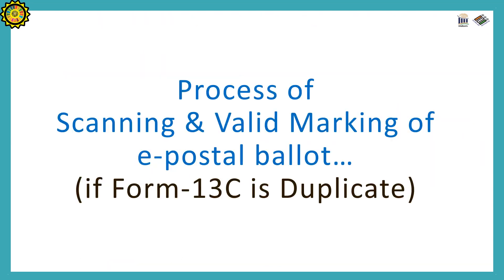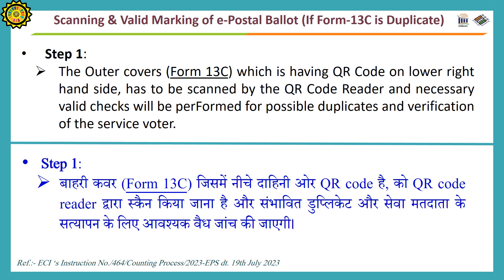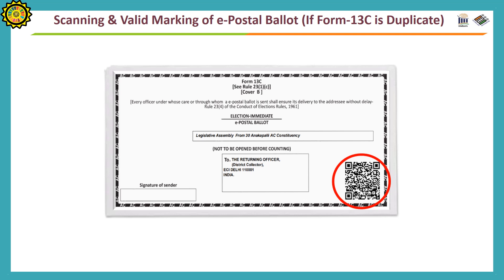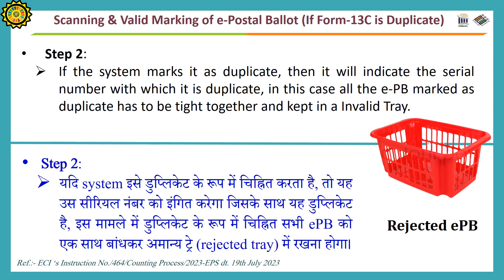Process of scanning and valid marking of E-PB if form 13C is duplicate. The outer cover form 13C, which has a QR code on the lower right-hand side, has to be scanned by the QR code reader. Necessary valid checks will be performed for possible duplicates and verification of the elector. A unique serial number will be provided by the system and must be manually marked on form 13C. If the system marks a duplicate, it will indicate the serial number with which it is duplicated. All E-PBs marked as duplicate must be tied together and kept in the invalid tray.